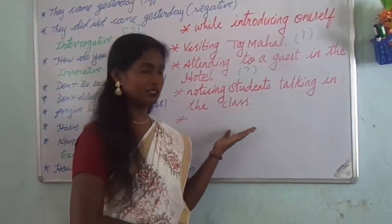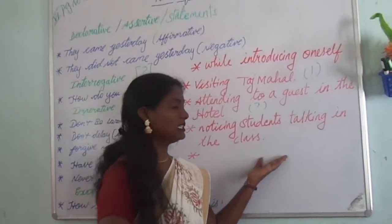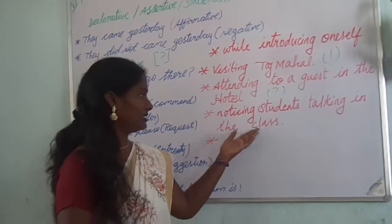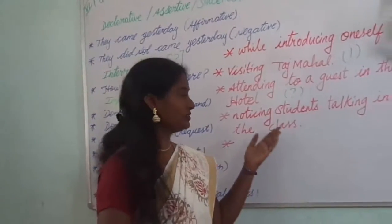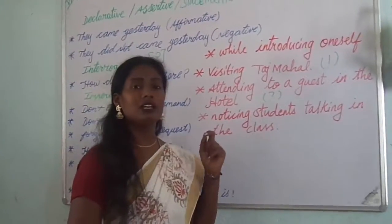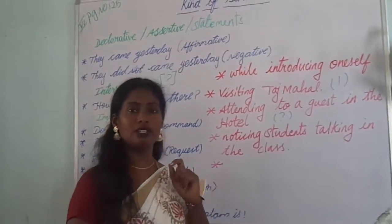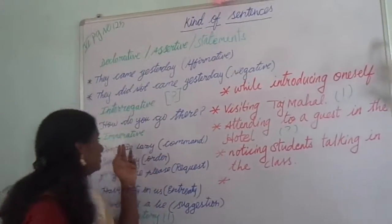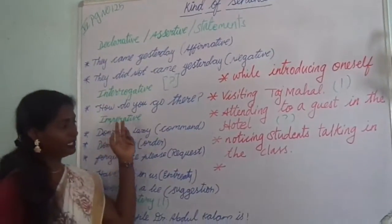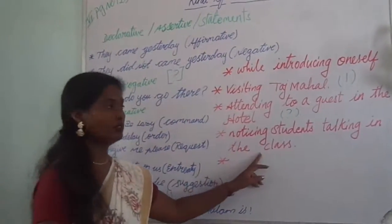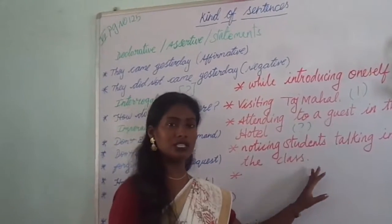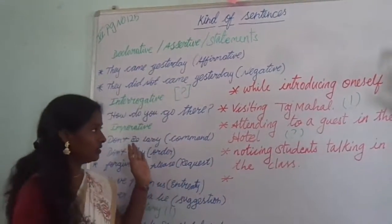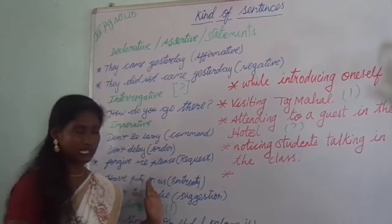Then noticing students talking in class — if the students are talking in the class, the teacher will not say it calmly. She will say very strongly, 'Don't talk!' So she will give an order or a command. So that is a type of imperative statement. Students should understand these situations, and then only they can be very clear with all these sentences.